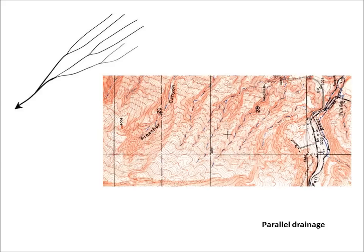Parallel drainage patterns — illustrated here by the dotted lines on the map — are patterns that form where there's a pronounced slope to the land surface, such as a mountain face draining into a valley. The parallel pattern develops in regions of parallel, elongated landforms like outcropping resistant rock bands. Tributary streams tend to stretch out in a parallel fashion, following the slope of the surface. A parallel pattern sometimes indicates the presence of a major fault that cuts across an area of steeply folded bedrock.